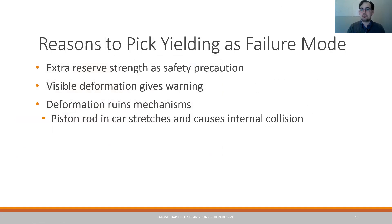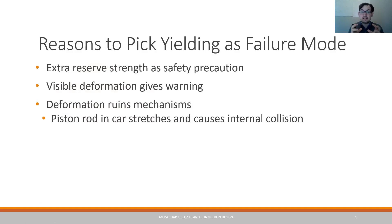Why do we pick yielding as a failure mode? The big thing is we want that extra reserve strength — even if I design to yield as my failure criterion, there's actually a little more strength past yielding. Yielding also produces a very large deformation, which serves as a warning. Additionally, if a large deformation occurs, it's going to ruin a mechanism. If a rod or gear bends too much, the mechanism no longer works as intended, causing internal collision — a very common case in engine failure from overheating.